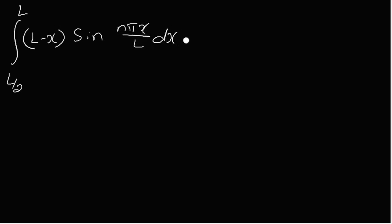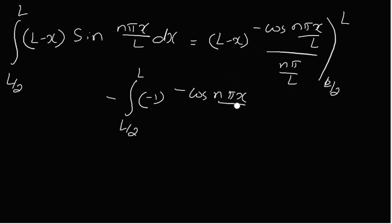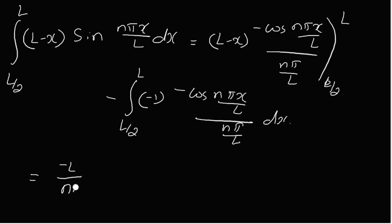For I₂ = integral from L/2 to L of (L minus x)·sin(nπx/L) dx, applying integration by parts: (L minus x)·(−cos(nπx/L))/(nπ/L) from L/2 to L, minus the integral from L/2 to L of (−1)·(−cos(nπx/L))/(nπ/L) dx.